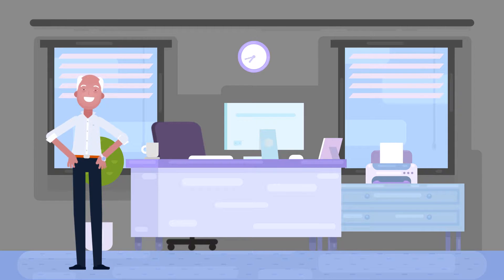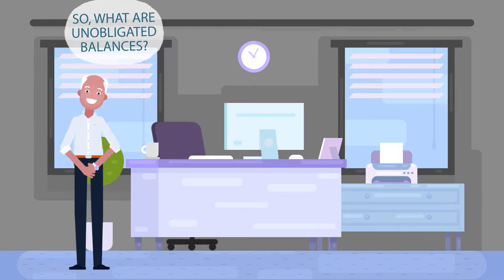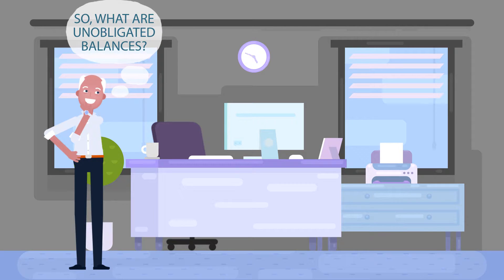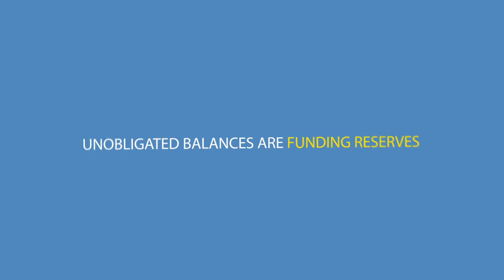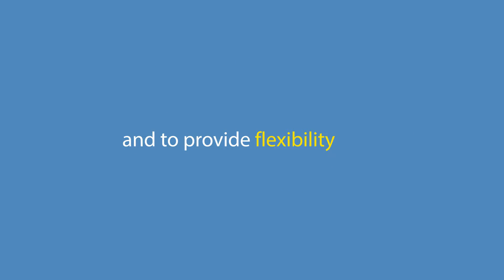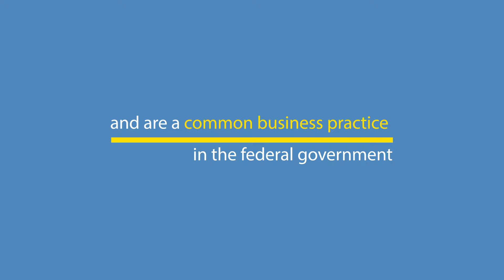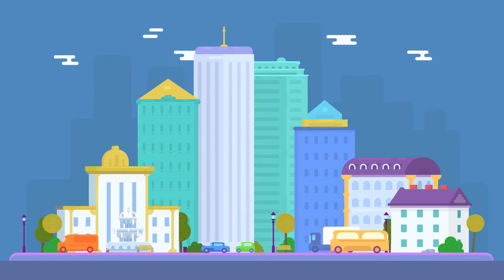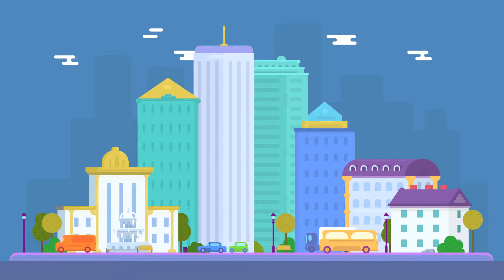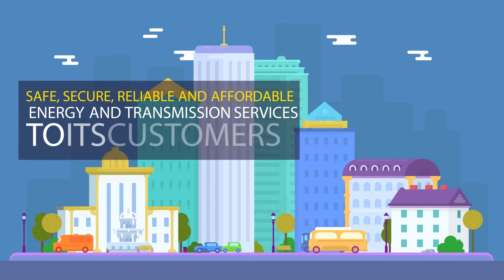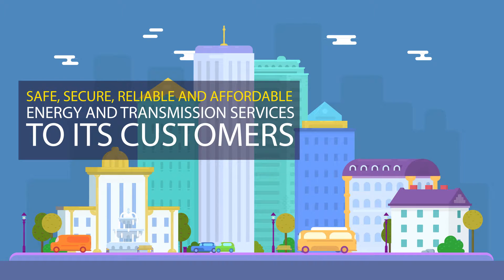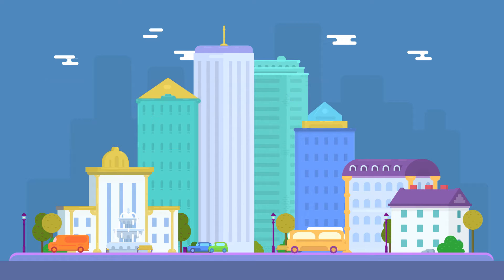One way to manage all of this is through unobligated balances. So, what are unobligated balances? Unobligated balances are funding reserves used to continue operating during emergencies and to provide flexibility with changes in funding, and are common business practice in the federal government and the broader electric utility industry. WAPA uses them as a sustainable tool to carry out its core mission of providing safe, secure, reliable, and affordable energy and transmission services to its customers.